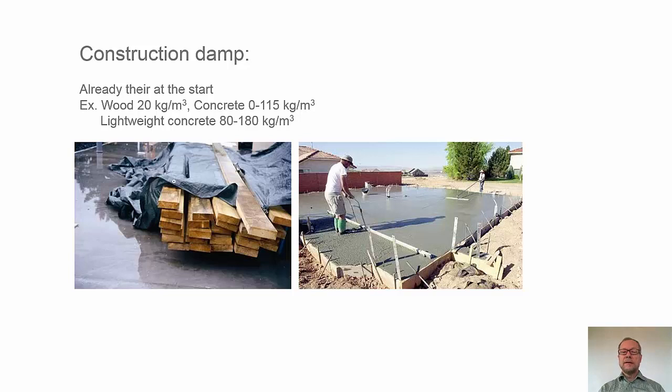On the right-hand side, we see where they're casting a foundation with concrete, and there's a lot of water involved, of course. And depending on how much cement that is used in the concrete, it's everything between 0 to 115 kg per cubic meter that has to be dried out.